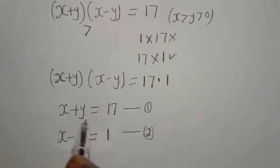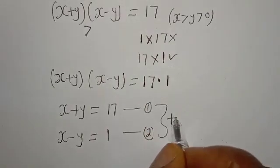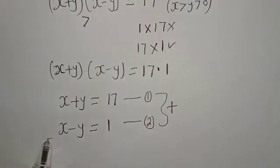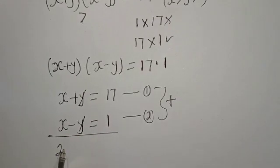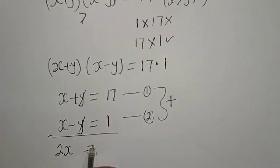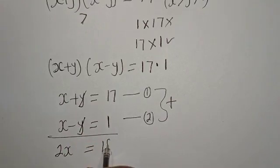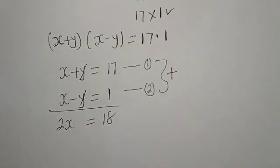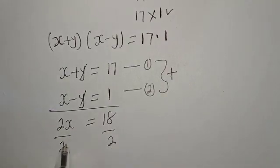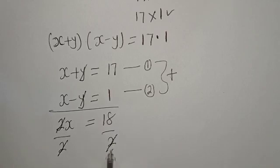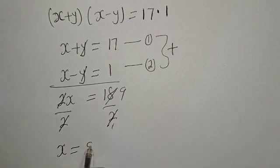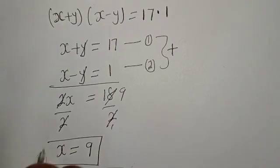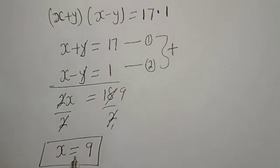We solve using the elimination method by adding equation 1 and equation 2 together. The Y terms cancel, leaving 2X equal to 17 plus 1, which is 18. Dividing both sides by 2 gives X equal to 9.